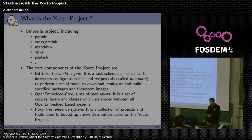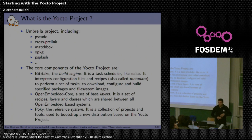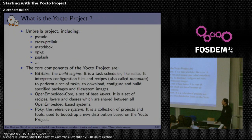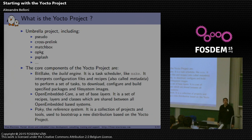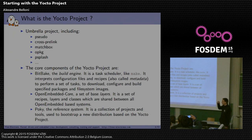What is the Yocto project? It doesn't represent any code really. It's just an umbrella project that handles a lot of different projects. So you have Pseudo — which is kind of like a fake root, but specific to BitBake and OpenEmbedded. You also have cross-prelink, MatchBox, and OPKG, which are maintained by the Yocto project.